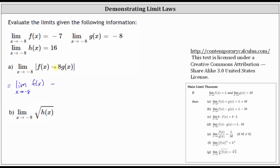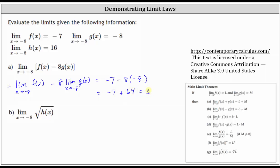But we can also factor out the eight and write it as eight times the limit of g of x as x approaches negative eight. We are given the limit of f of x as x approaches negative eight is negative seven, so we have negative seven, minus eight times the limit of g of x as x approaches negative eight, which is negative eight. Simplifying, we have negative seven plus 64, which equals 57.